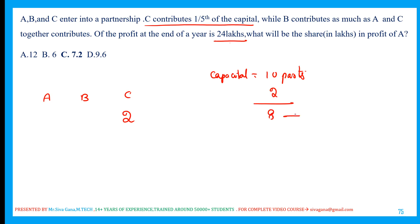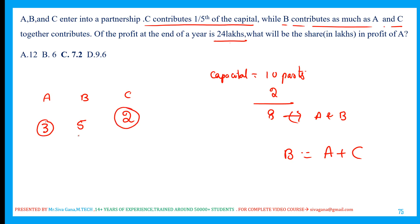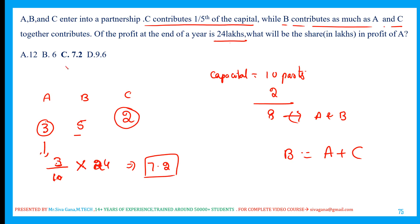The 8 remaining parts are shared between A and B under the condition that B contributes as much as A and C together. Sharing the 8 parts as A = 3 and B = 5: A plus C is 3 plus 2 = 5, which equals B — condition satisfied. So the ratio A:B:C = 3:5:2 out of 10 parts. A's profit share is (3/10) × 24 lakhs = 7.2 lakhs.